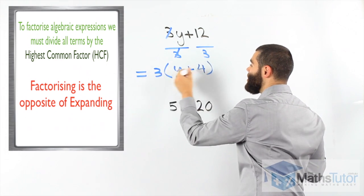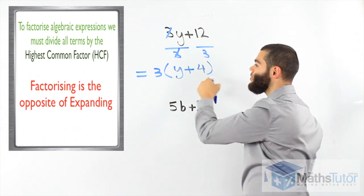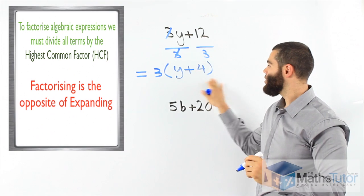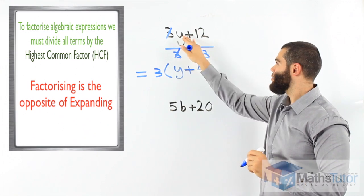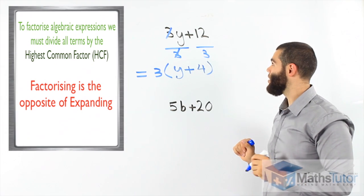3 times y, 3y, 3 times positive 4, positive 12. Yes, we factorise correctly because our answer, once expanded, goes back and it will equal the top as it was there.